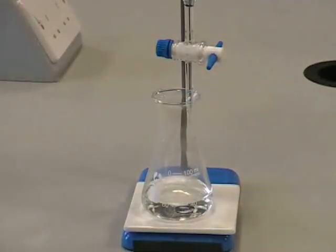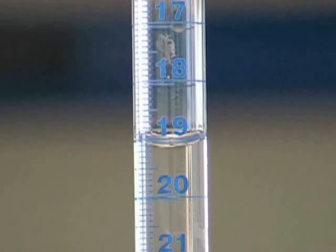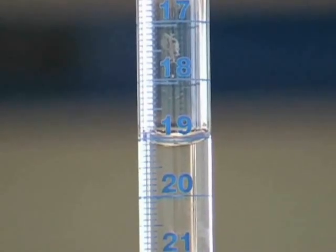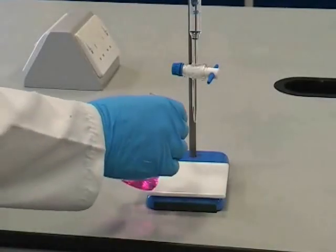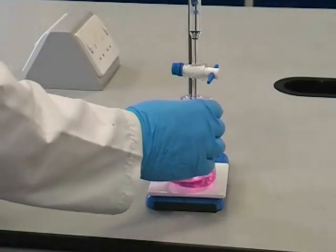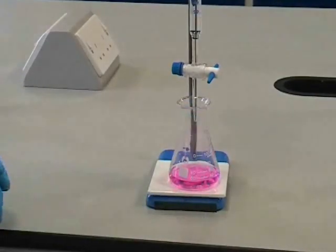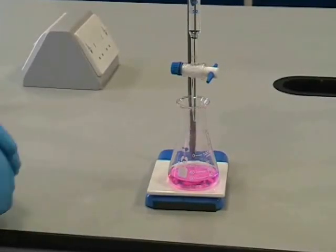We can now work out the volume of solution which we added from the burette by noting the final burette reading and performing a simple subtraction. In this case we've added just over 16cm³ altogether so we can reasonably expect our accurate titrations to require somewhere in the region of 15cm³ of solution.